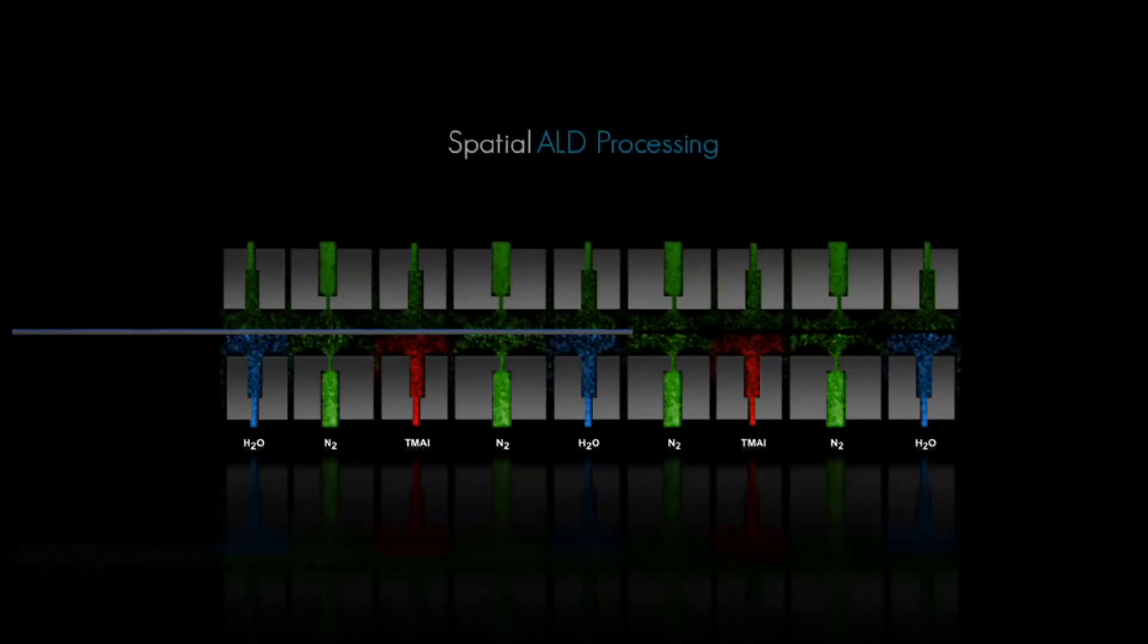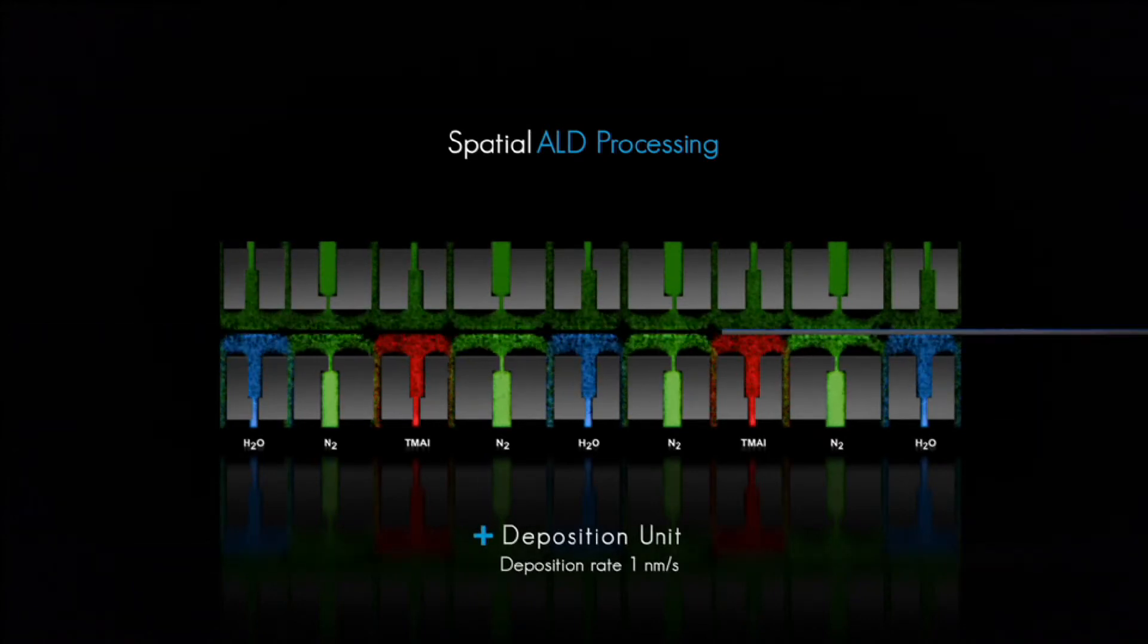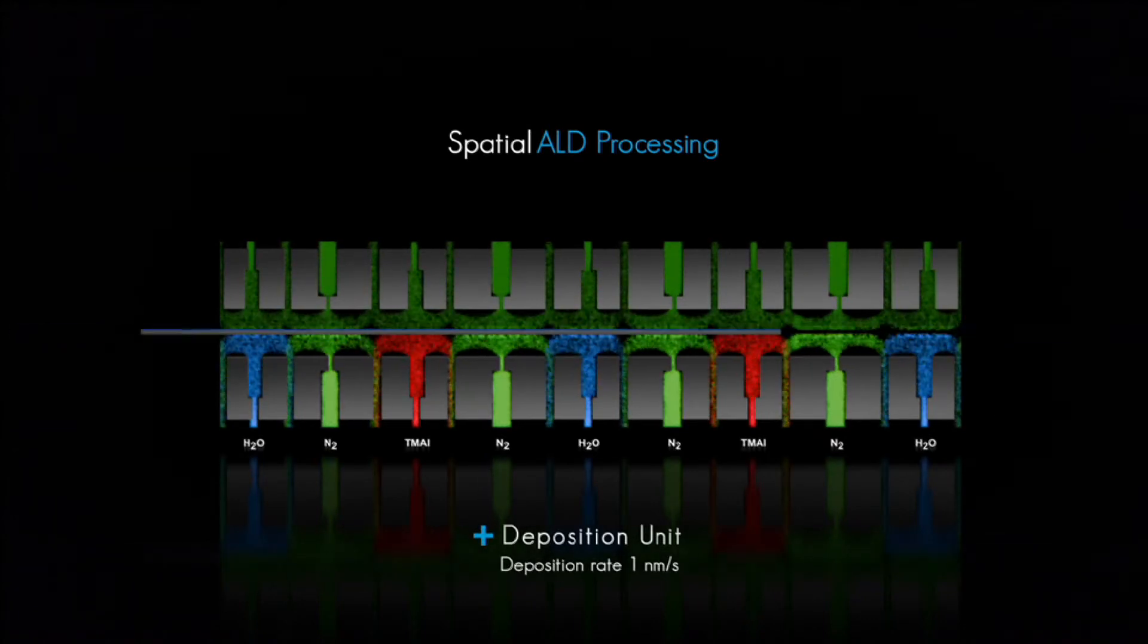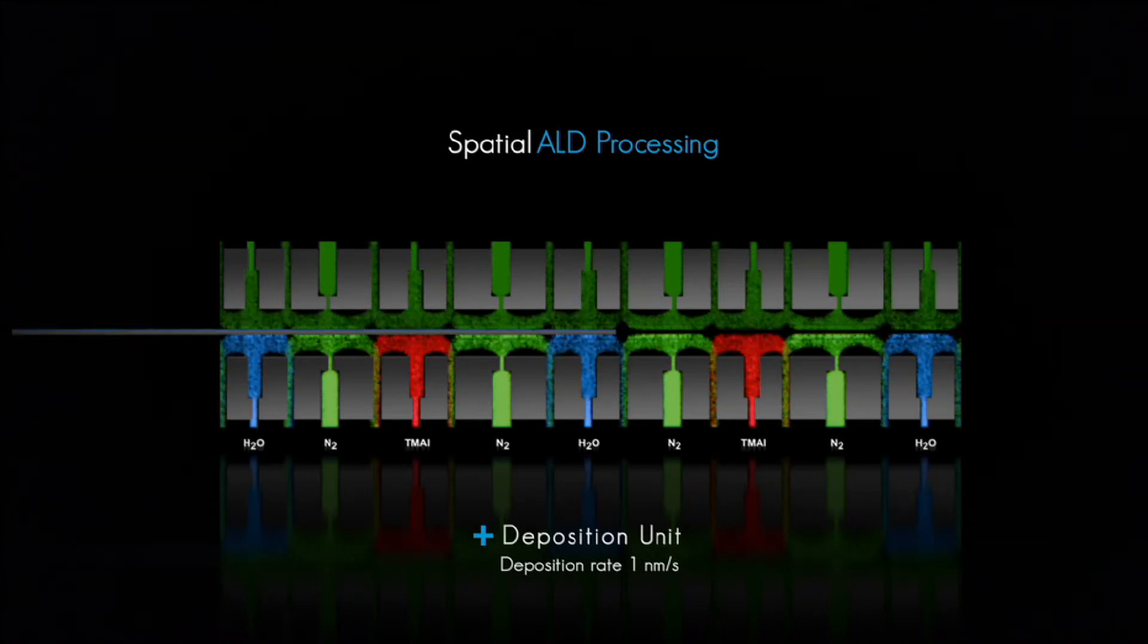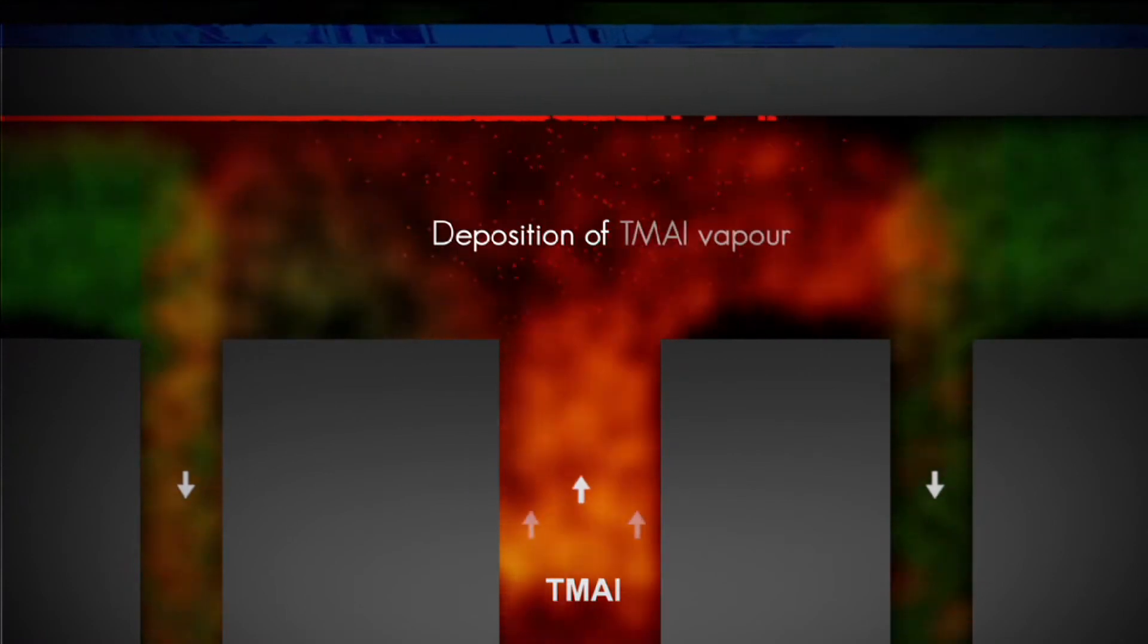The two process gases are separated by nitrogen gas curtains to prevent any contamination. The arrangement of the different gas compartments allows the ALD process to work in both directions.